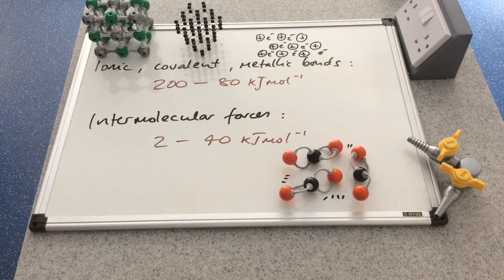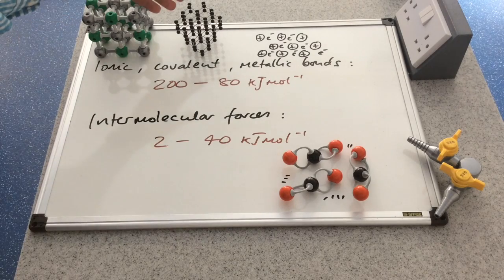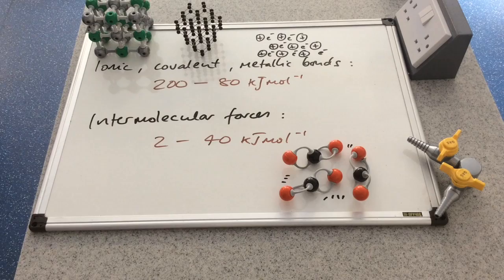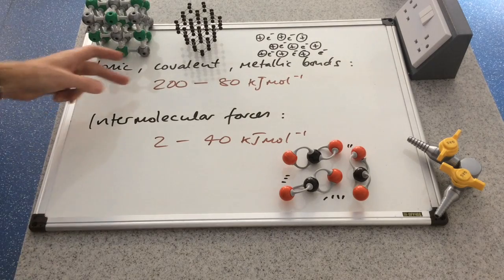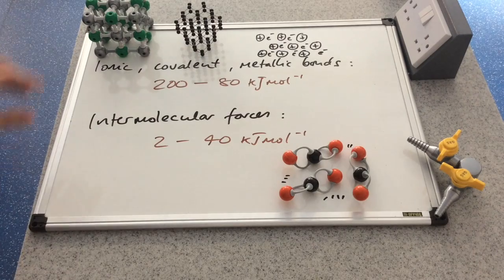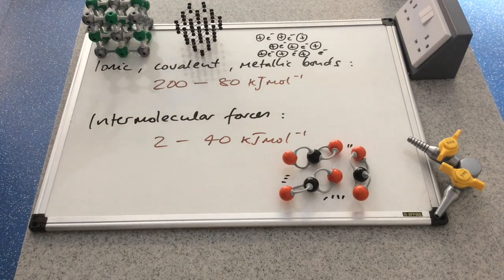You can see on this board, if you're wanting to break down an ionic lattice, a giant covalent lattice, or a giant metallic lattice, you're going to have to put in anywhere between 200 and 80 kilojoules per mole. So a lot of energy needs to go into these things to break them down.